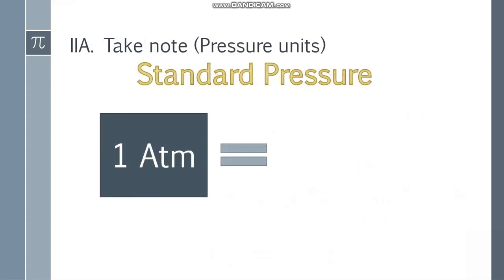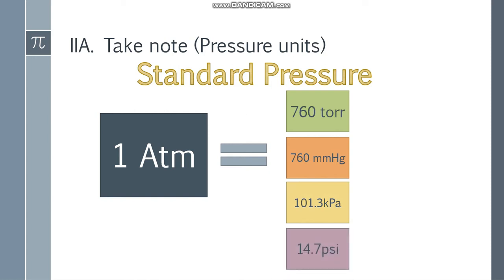Take note, pressure units. We have standard pressure. One atmosphere is 760 torr, 760 mmHg or millimeter of mercury, 101.3 kilopascal or kPa, and 14.7 psi or pounds per square inch. That's the standard pressure and they're equal to each other.